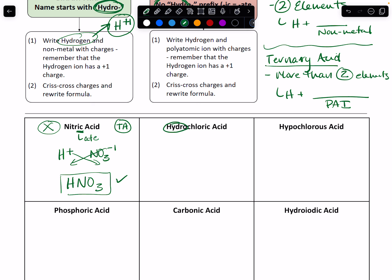Now we have hydro. So that tells me this is a binary acid — hydrogen plus a non-metal. And then we've got the root chlor in here, so that tells me that's chlorine or chloride. So Cl, group 17, minus one charge. Then we cross our charges and we get HCl — plus one for the hydrogen, minus one for the chloride — a neutral molecule. That would be the formula for hydrochloric acid.